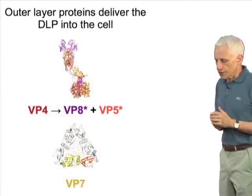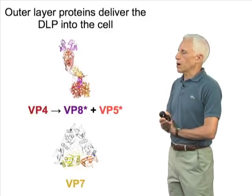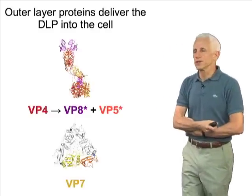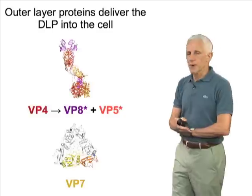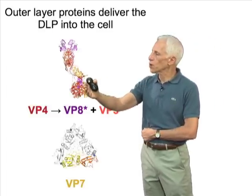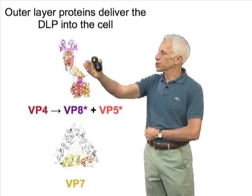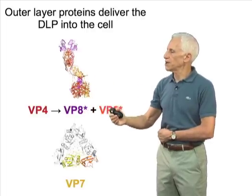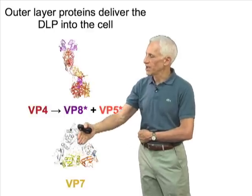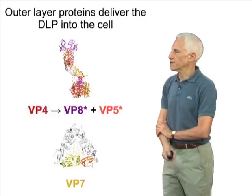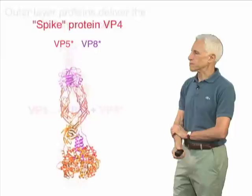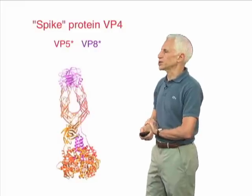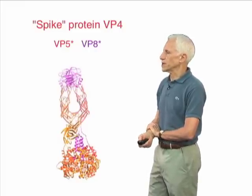We're going to focus on the outer layer proteins and their role in delivering the double-layered particle into the cell. The outer layer proteins are VP4—which gets cleaved to VP8 and VP5 when the erected conformation is established—and VP7, which locks everything in place. VP4, the spike protein, is actually a very curious structure indeed.